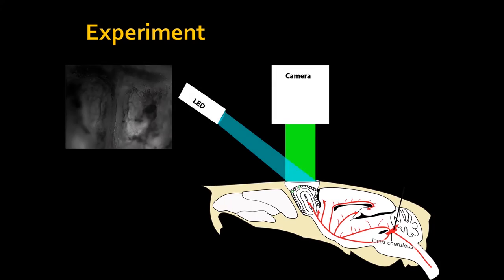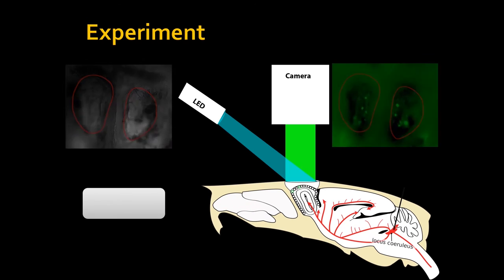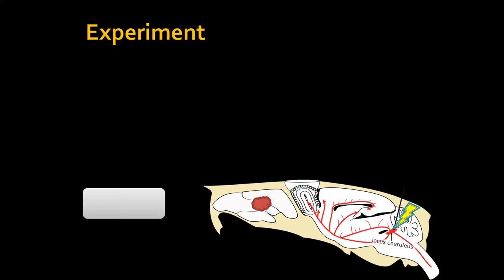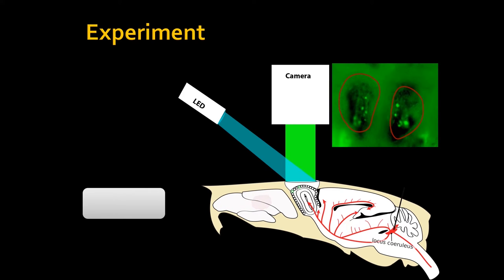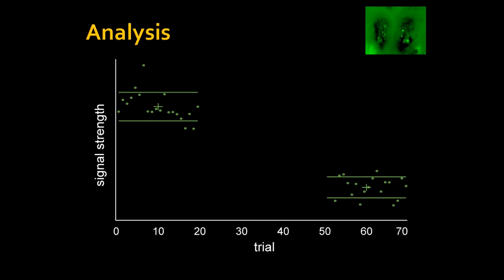I did basically the same experiment my advisor had done with electrophysiology, but now with calcium imaging. I presented an odor a couple of times, then stimulated the noradrenaline-releasing system during odor stimulation, then did another round of imaging to see whether there was a change before and after treatment. I actually found the same thing, which was quite astonishing — because these are the neurons that detect the chemical signal in the air, I would have expected nothing to happen at that stage.